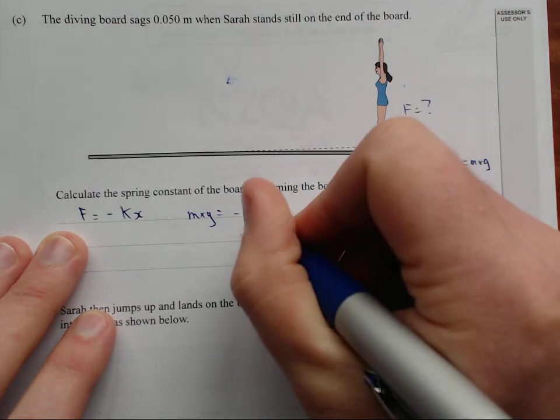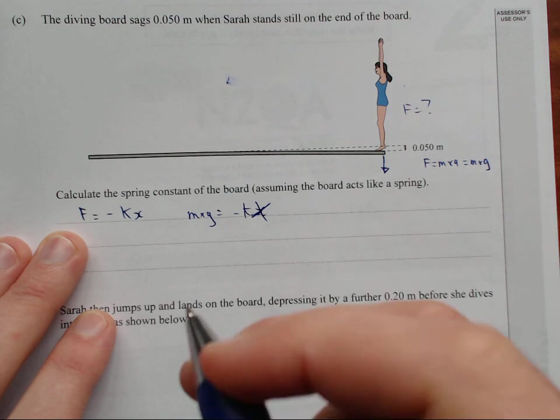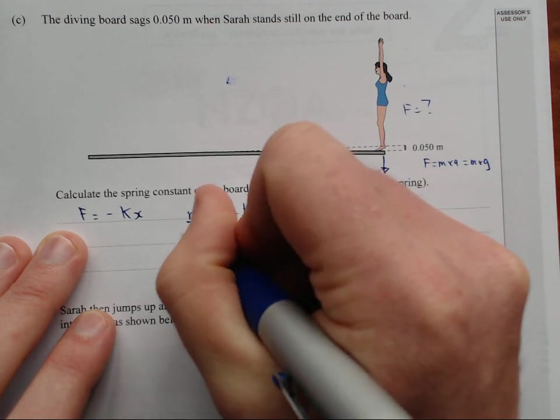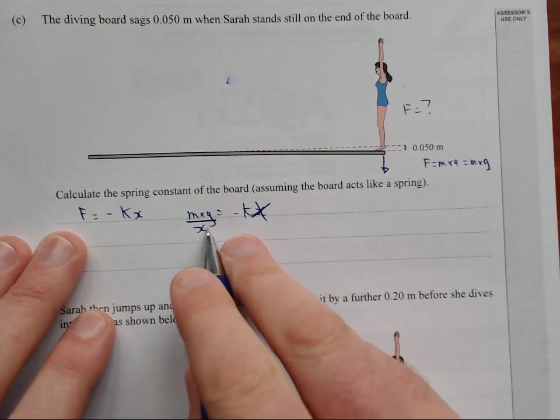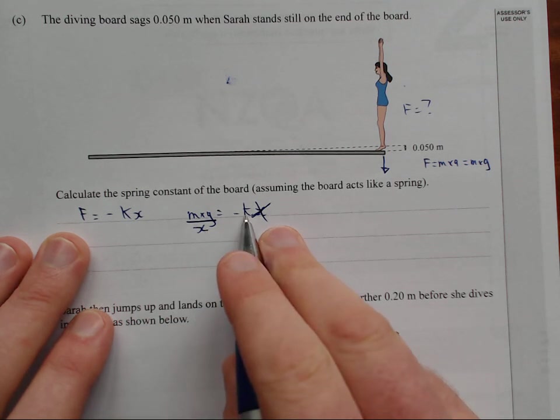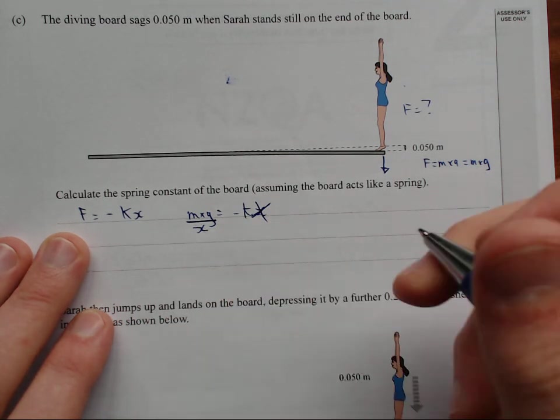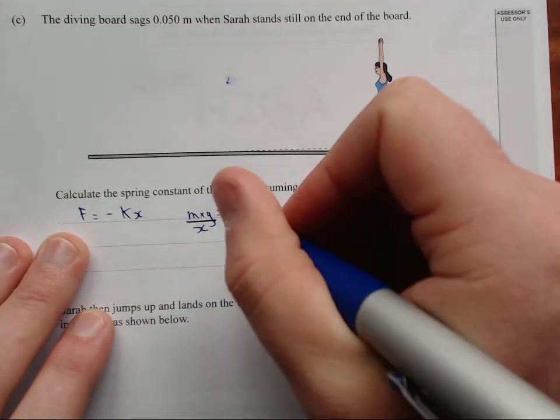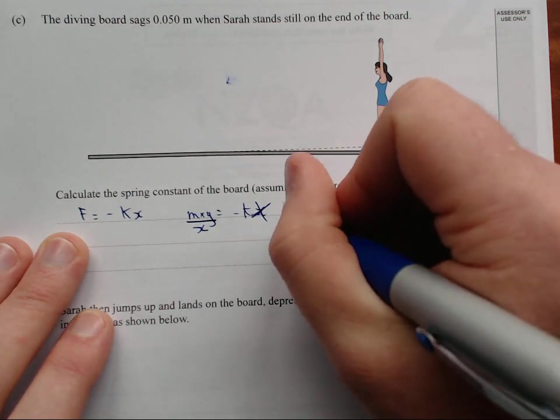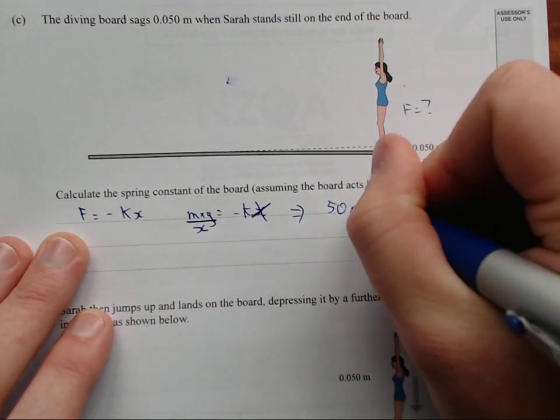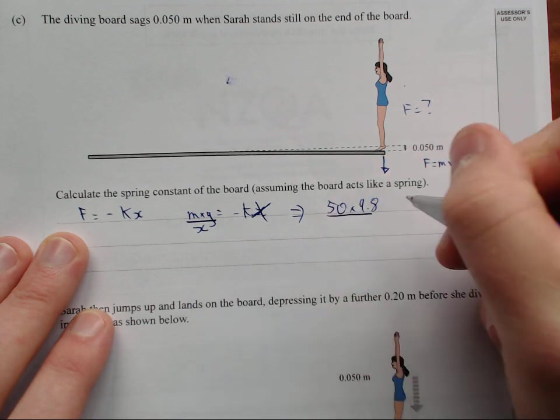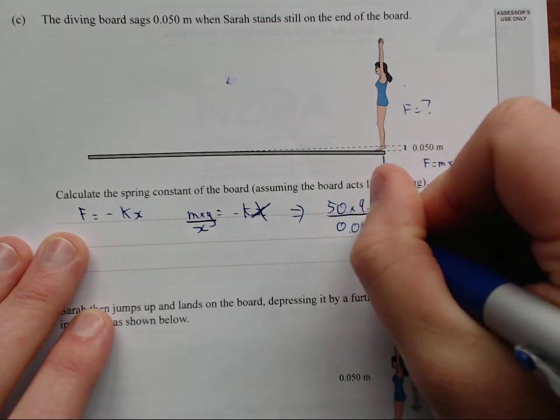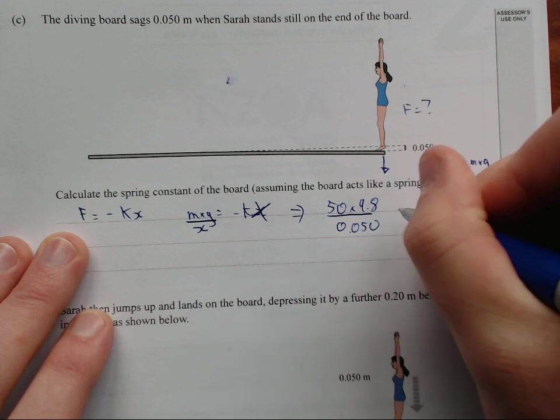I'm going to divide both sides by x. So, I'm going to cancel that out over here. Just cross that out. Divide by x. So, I have mass times gravity, divided by the displacement, equals the spring constant. And that, if I just, I'll write the numbers in. So, I'll put an arrow to say I'm going to do the numbers. 50 times 9.8 divided by 0.050 equals.